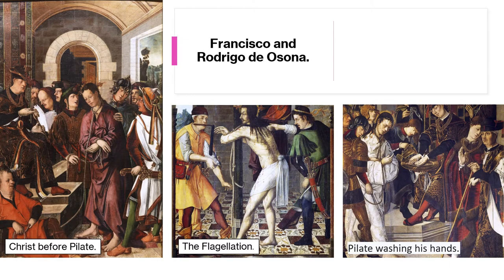Francisco de Osona was born in 1465 and died in 1514 in Valencia. His father, Rodrigo de Osona, was born also in Valencia in 1440 and died in 1518. Rodrigo de Osona received the influence of the Italian painters Paolo de San Leo Cadio and Francesco Pagano in 1472 in Valencia, Spain.